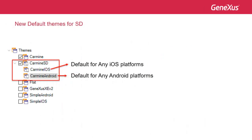Our apps must follow the Android and iOS design guides. Most behaviors are determined by default, without the need for developers to do anything. But another part of the behavior will be implemented mostly in the themes, and another part as control properties.